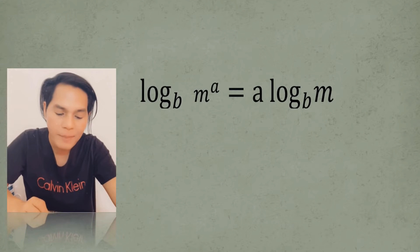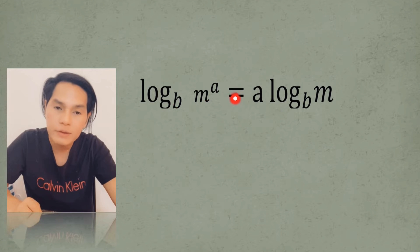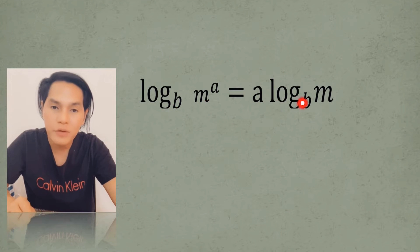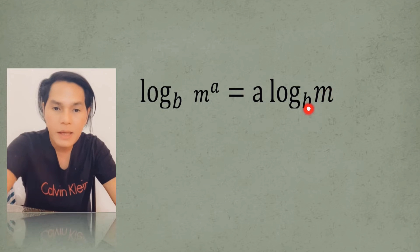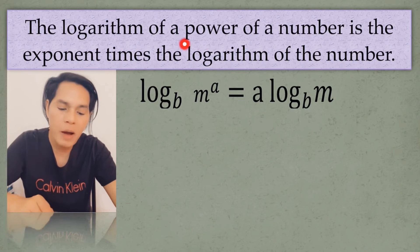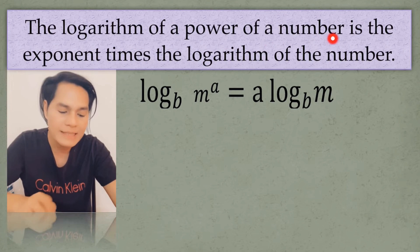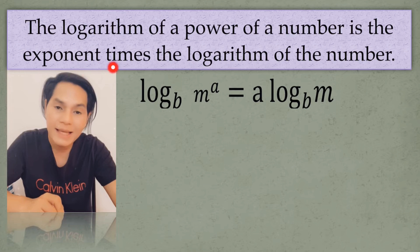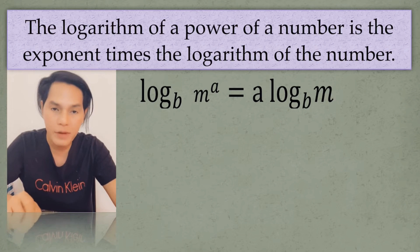The next law of logarithm is the log of m to the power of a to the base b, which is equal to a times the log of m to the base b. This means that the logarithm of a power of a number is the exponent times the logarithm of the number.